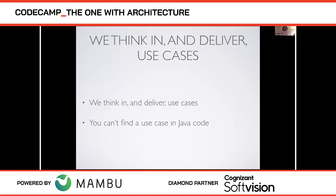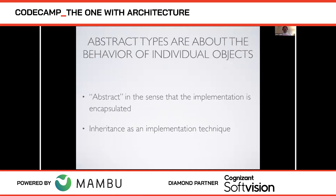We want to enable Alan Kay's vision. Abstract data types are just about the behaviors of individual objects. What we try to do is remove the user from the details of implementation — encapsulate the implementation. In fact, 'abstract data type' is probably a bad name. Doug McElroy or Brian Kernighan called them 'concrete data types' in C++ — there's nothing abstract about them.